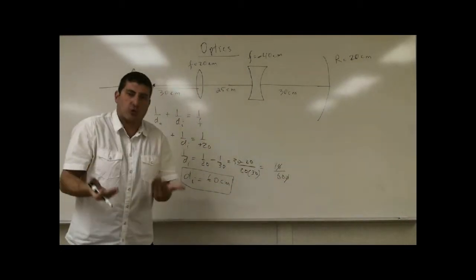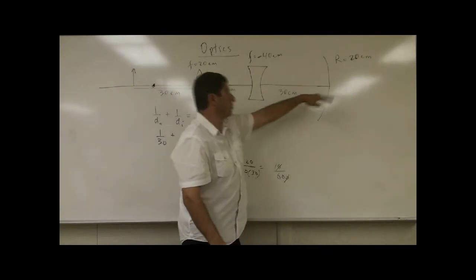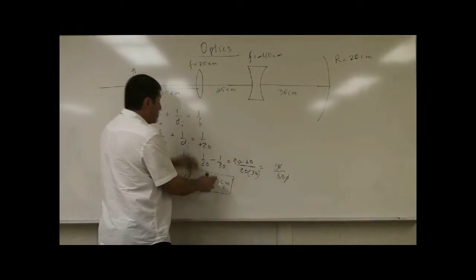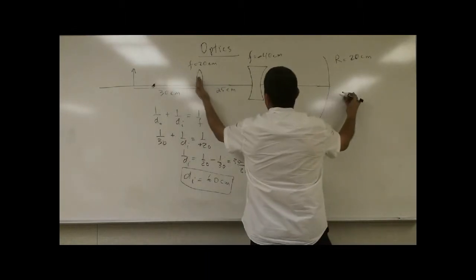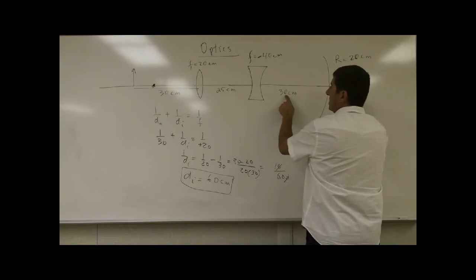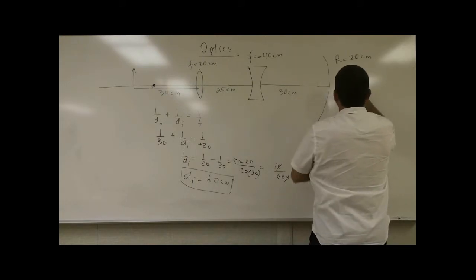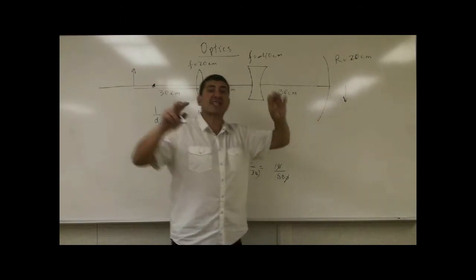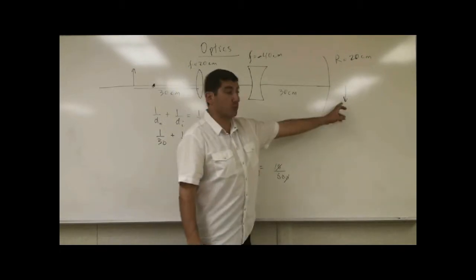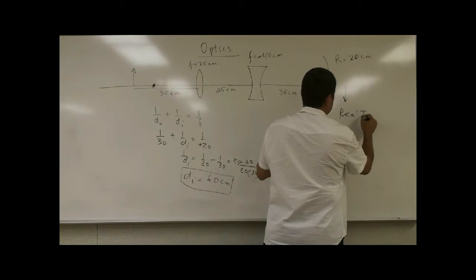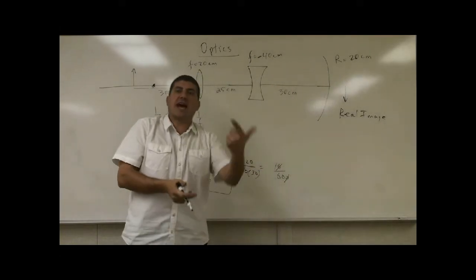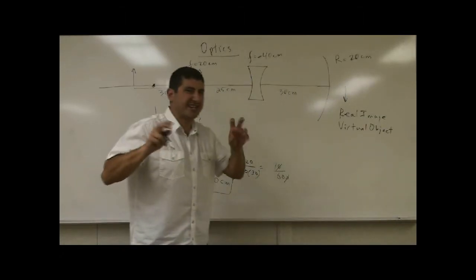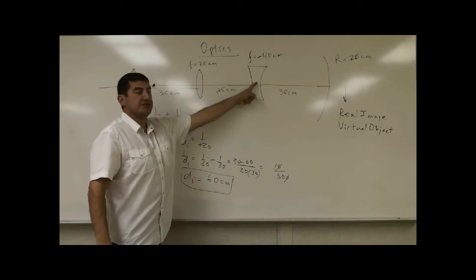But that image will never really form — it would have formed over there if the mirror and diverging lens weren't there. So we treat this image as if it's 60 centimeters this way: 25 plus 30 is 55, so it's 5 centimeters past the diverging lens. That image, which would have formed, acts as a virtual object — it's a real image that would have formed there, but it never formed. So it acts as a virtual object for the diverging lens; it doesn't really exist.